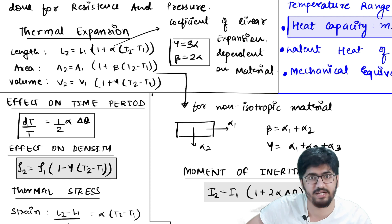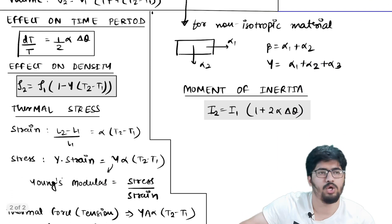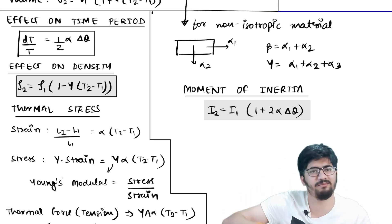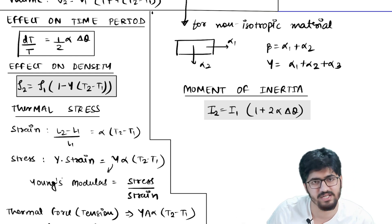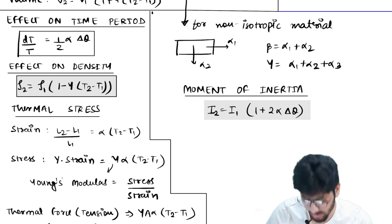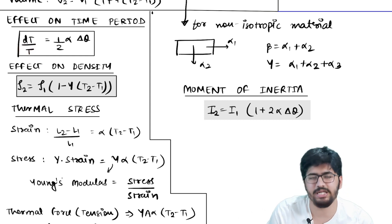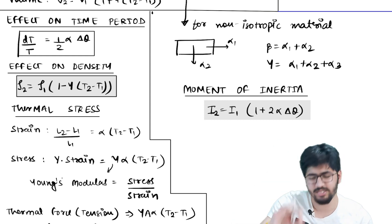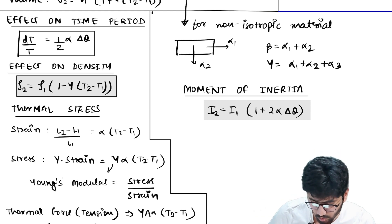Next is the effect of temperature on time period. If a pendulum's temperature is increased, its length increases, and the time period changes. The formula is: dT/T = ½·α·dθ, where dT is the change in time period, T is the original time period, α is the coefficient of linear expansion, and dθ is the change in temperature.